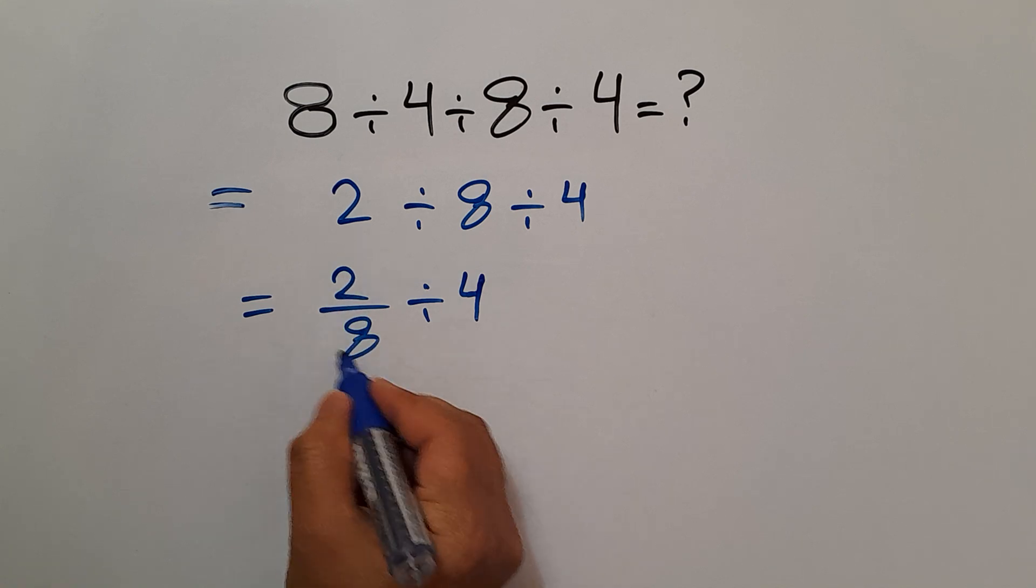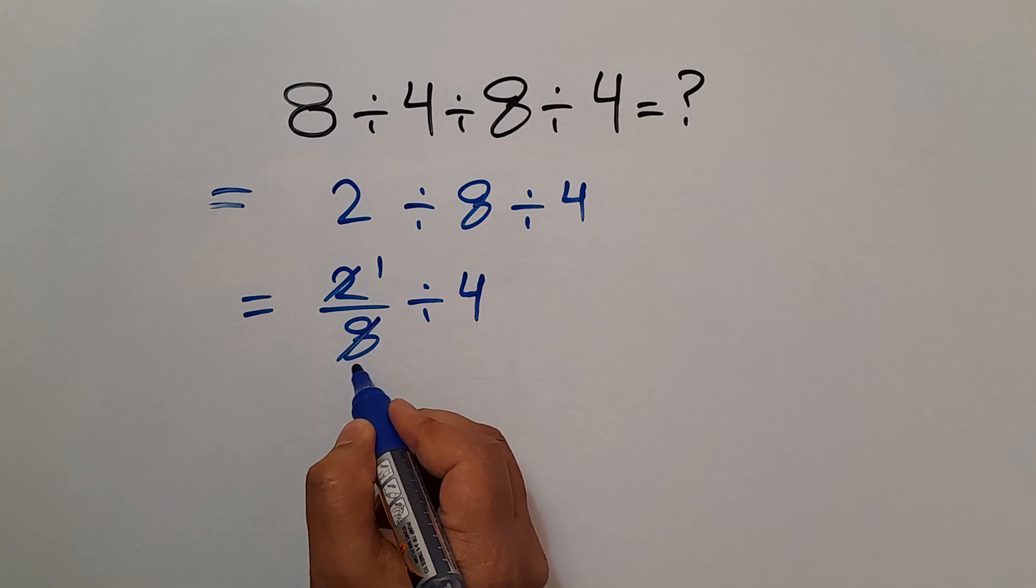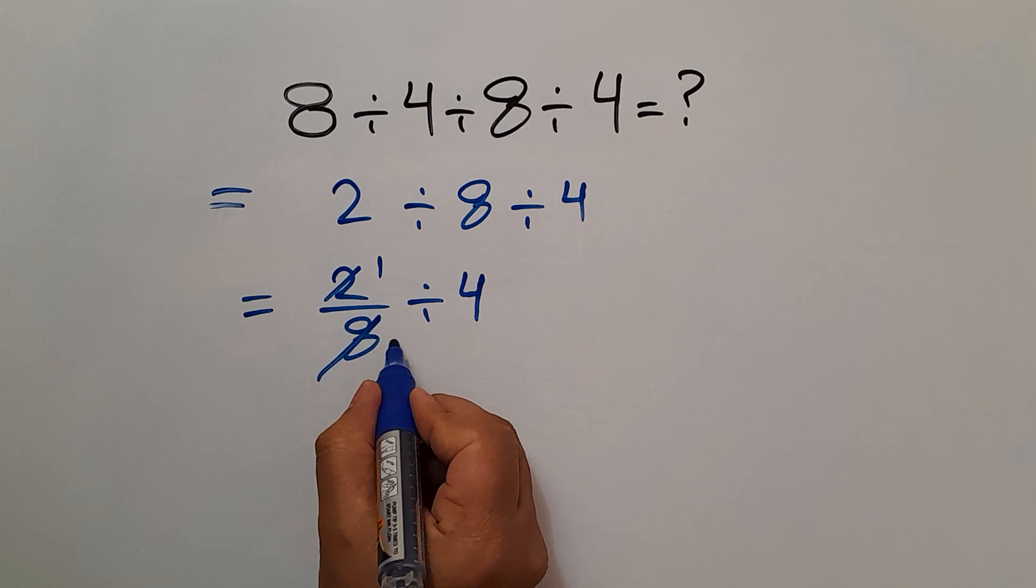Let's simplify this fraction. 2 divided by 2 gives us 1, and 8 divided by 2 gives us 4.